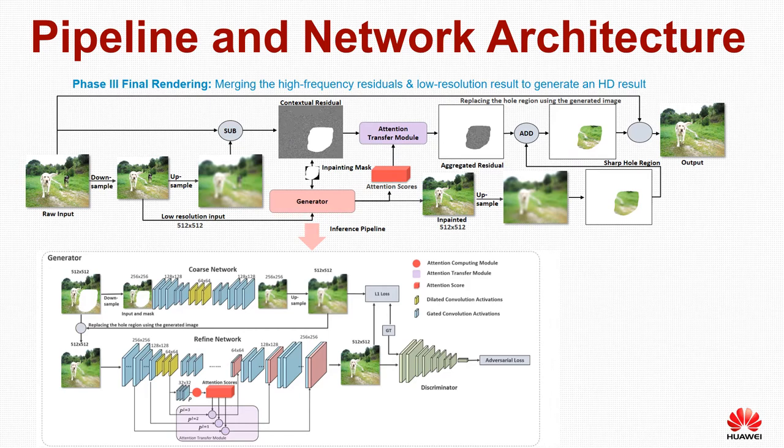As shown, the generator is the only trainable component in the whole pipeline, and it only operates on small images. That means it can be trained with small images only. In addition, the training and inference can be very efficient.